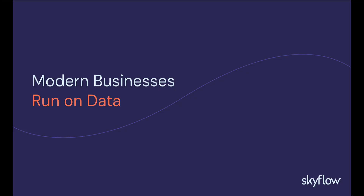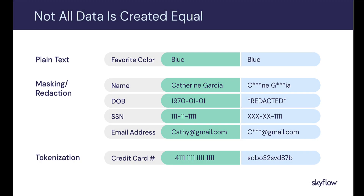Modern businesses really run on data. Data drives our business decisions, product direction, helps us serve our customers better, increases the lifetime value of a business, and even allows us to create new types of data-driven applications like real-time recommendations that you see on Netflix. We're collecting more and more data all the time and storing that in our back-end systems. But the really important thing is that not all data is created equal — some data, like people's names, dates of birth, social security numbers, emails, credit card numbers, and healthcare information, requires better protection than others.